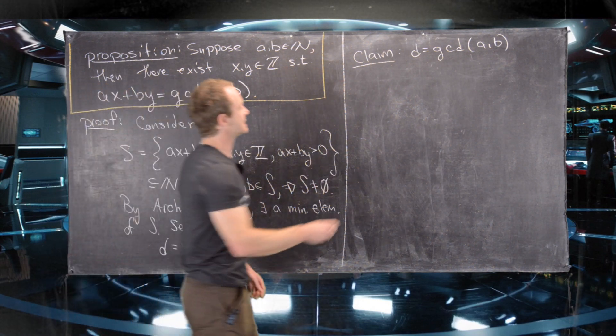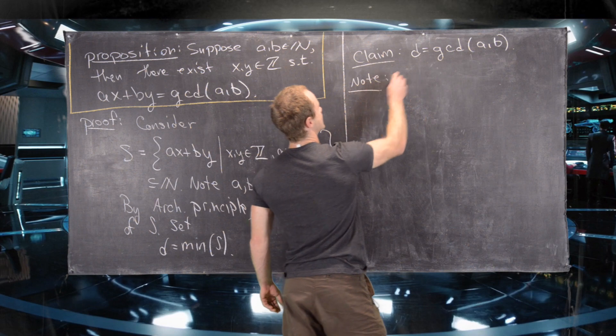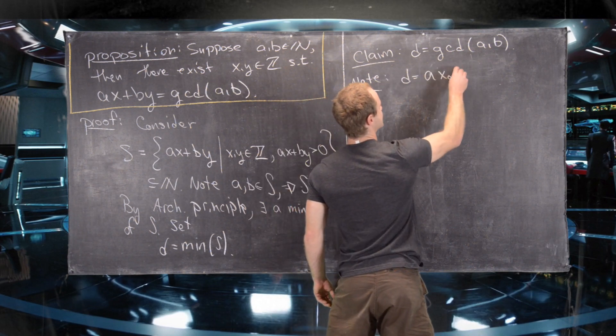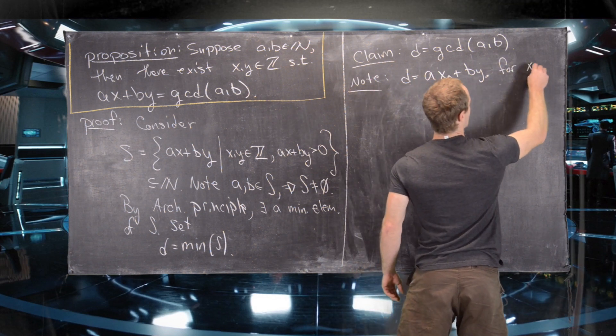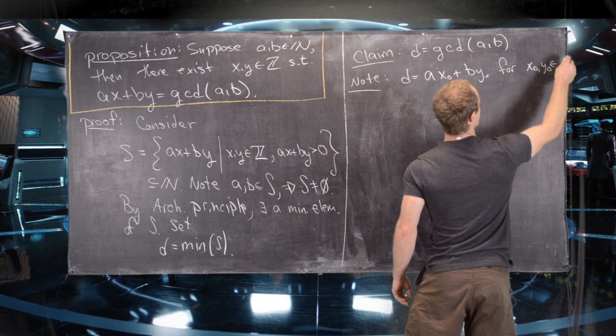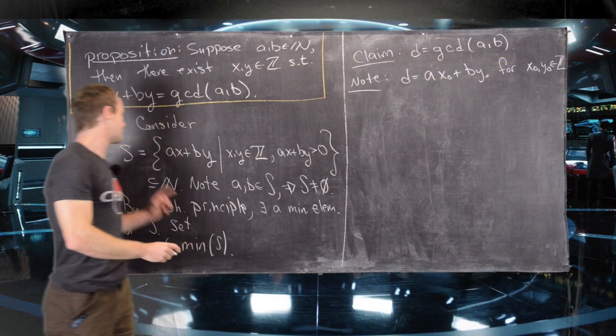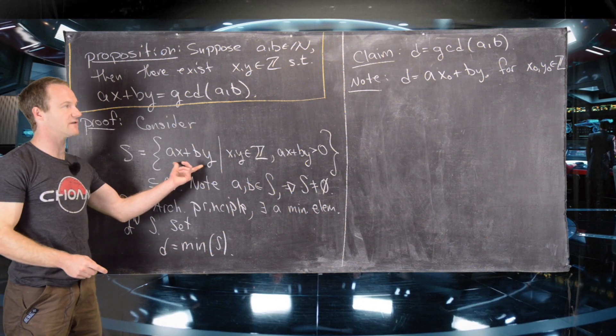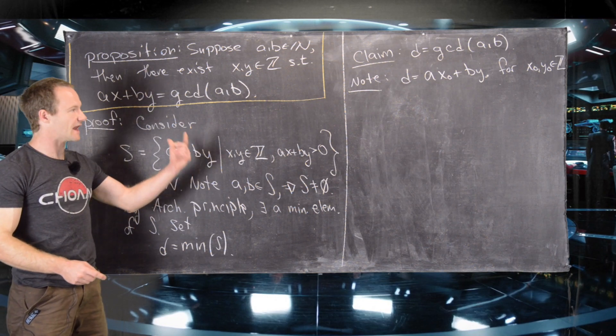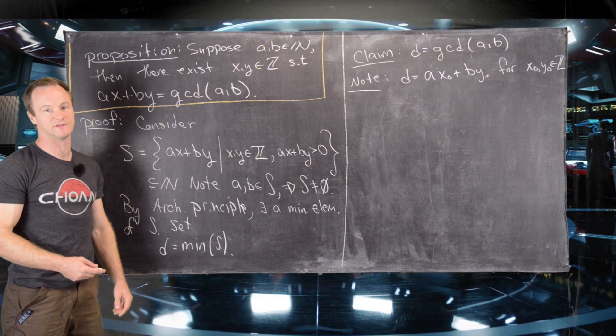So let's notice that D equals AX0 plus BY0 for X0, Y0 in the integers. And this comes from the fact that D is an element of S, and everything in S is of this shape. So we'll let X0 and Y0 be the corresponding X and Y that achieve this value of D.